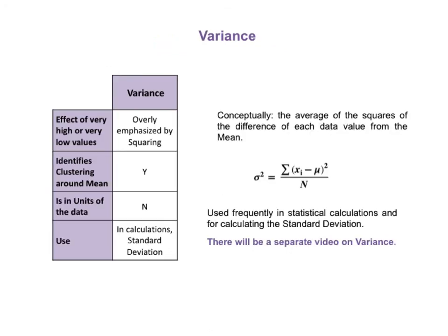There will be a separate video on the concept of variance, so we won't go into a lot of detail here. Conceptually, the variance is the average of the square of the difference of each data value from the mean. The squaring of the differences gives disproportionate weight to very high or very low values. Here is the formula for calculating the variance for a population. The symbol for population variance is the Greek letter sigma squared. The numerator is the sum of squares, and the denominator is capital N, the size of the population, if it is known.